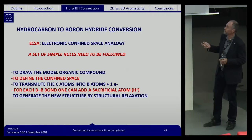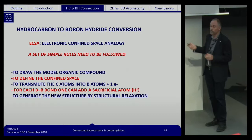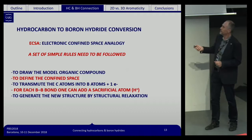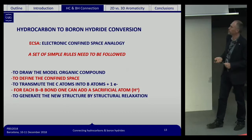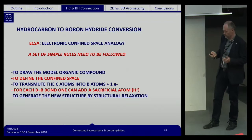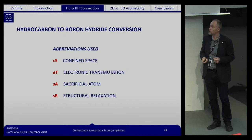Taking this into account, we have formulated a method called the Electronic Confined Space Analogy (ECSA). The process goes as follows: take the model organic compound, define the confined space, transmute all carbon atoms into boron−, add a sacrificial atom (generally a proton) for each boron-boron bond, and generate the final structures by structural relaxation. The abbreviations are: CS for confined space, ET for electronic transmutation, SA for sacrificial atom, and SR for structural relaxation.